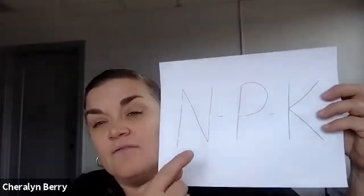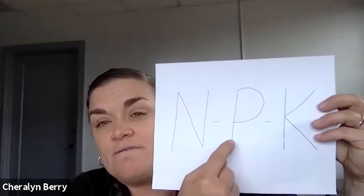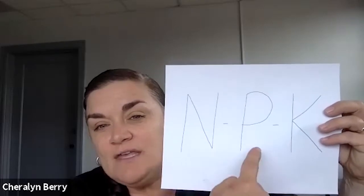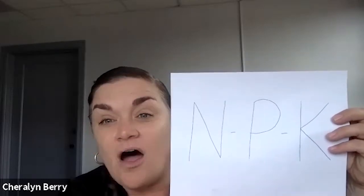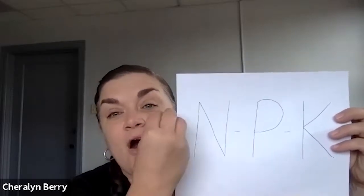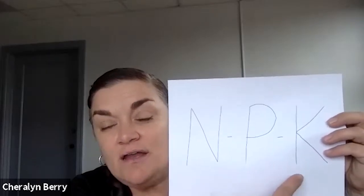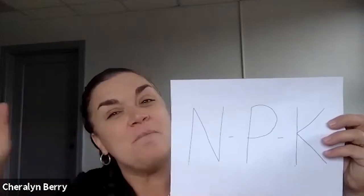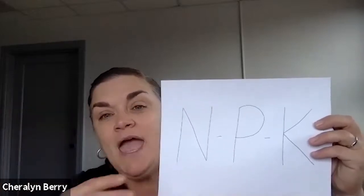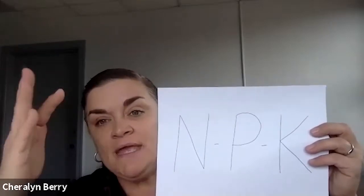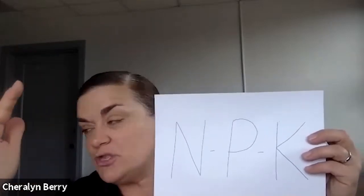Those three numbers always in order represent the content of nitrogen, phosphorus, and potassium. You will find these three as elements on the periodic table, and they are plant major nutrients. These are necessary not only for us as humans, but for plants as well.